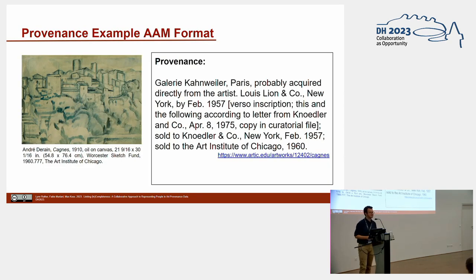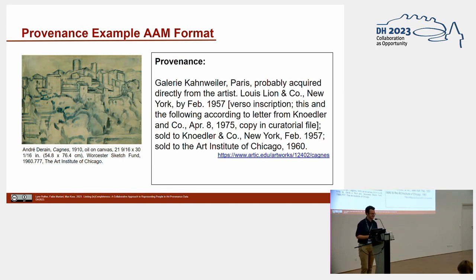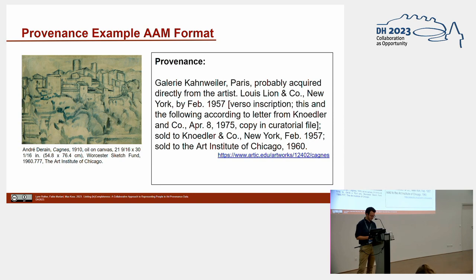Here, I give you a first glance of what we're dealing with. It is an example of a provenance text from the website of the Art Institute of Chicago. It is important to note that U.S. museums have been at the forefront of publishing provenance information online and are still today the most transparent institutions in that regard. Moreover, the American Alliance of Museums, AAM, has recommended a format for writing provenance text as early as 2001.